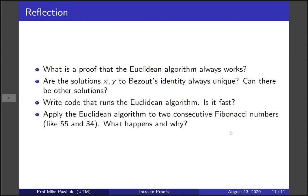Let's take a moment to reflect. What is a proof that the Euclidean algorithm always works? We didn't talk about it, so how do we know that it actually works? Are the solutions x and y to Bezout's identity always unique? Can there be other solutions?